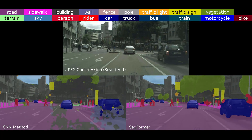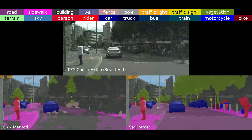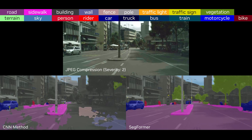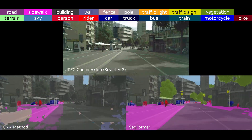During the labeling process, JPEG compression is typically used to reduce file size, allowing easy file transfer and reducing storage expenses. Here, we increase the JPEG compression ratio, and Secformer continues to produce robust results with high accuracy.